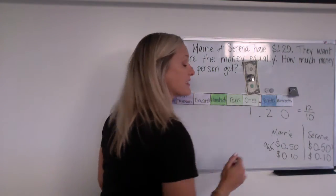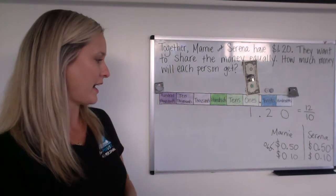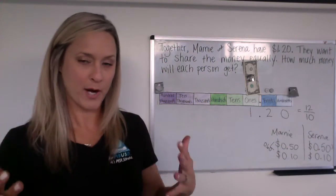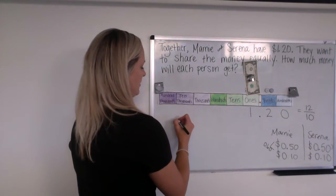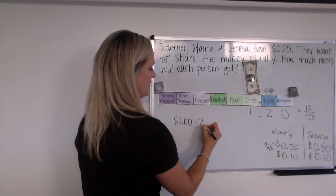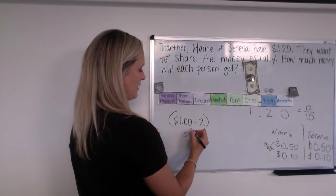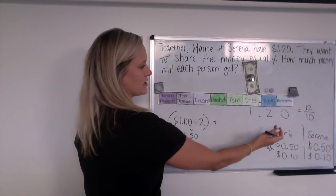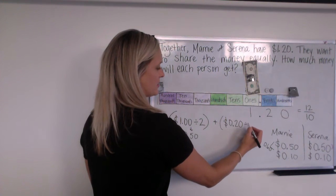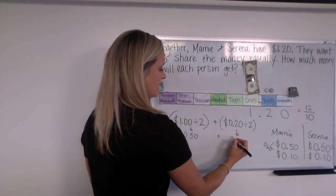To represent this with the distributive property, because this is actually the distributive property. So if you had $1.20 and you were breaking it apart in pieces, you did $1 divided by two. That was our 50 cents, right? Plus, we also did two dimes divided into two groups. Two groups would be Serena and Marnie, right? And we knew that was 10 cents.